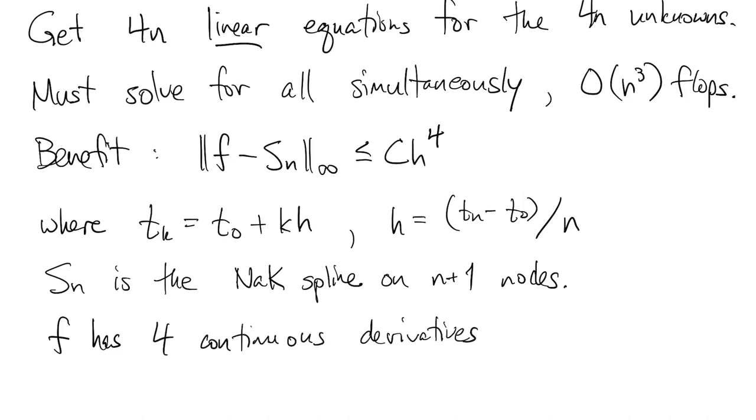The approximated function f has to have four derivatives in order for this bound to be true. By going from piecewise linear to the cubic spline, we go from second order convergence to fourth order convergence.